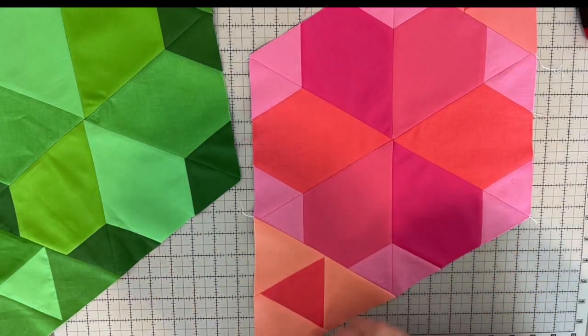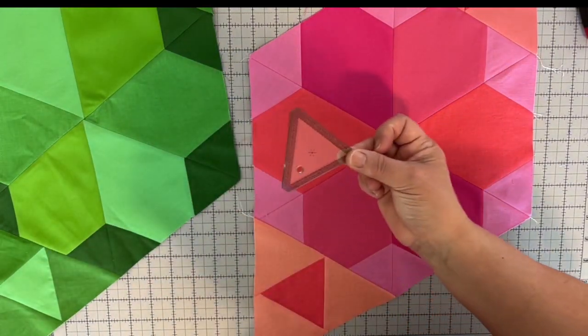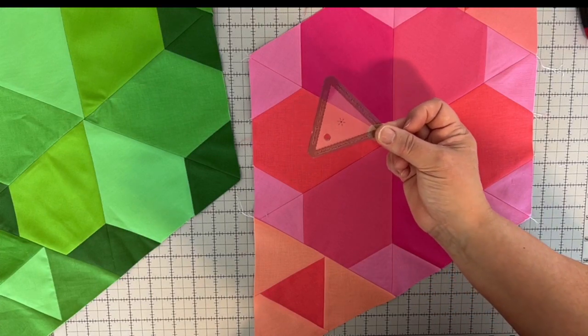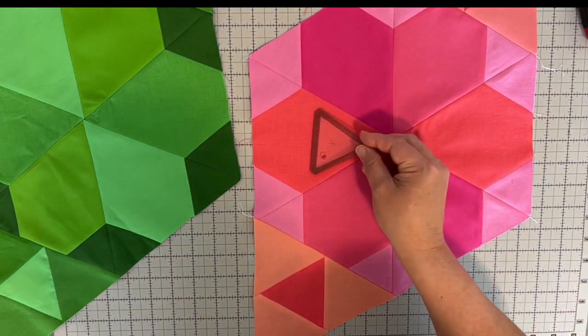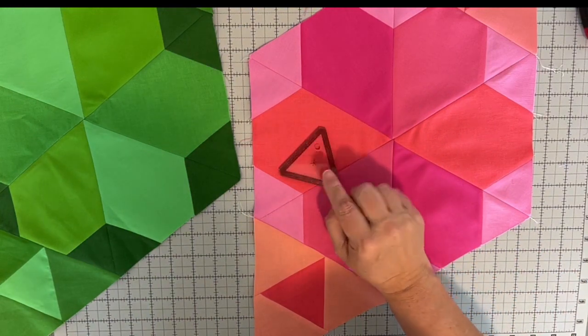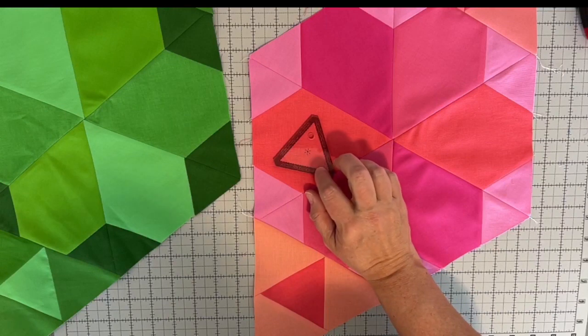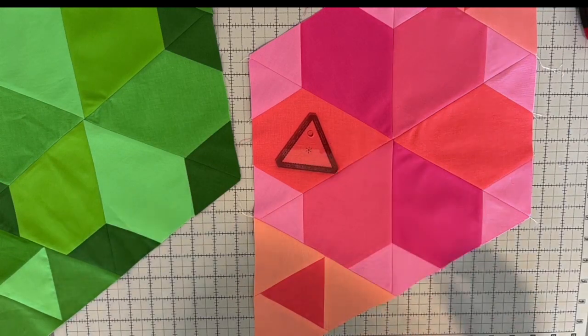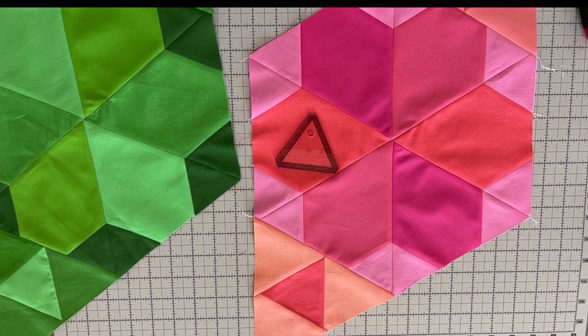Now, if you were wondering what this is, because I was using this quite a bit on cutting the triangles and trimming the tips off of them, this is the fussy cut shapes that Julie put out. Actually, I will show you all the shapes.